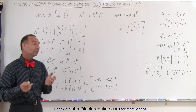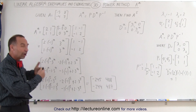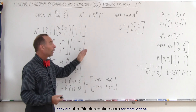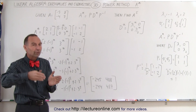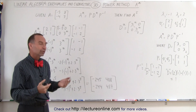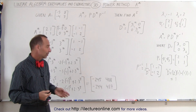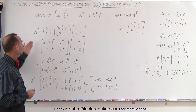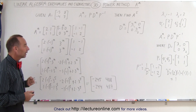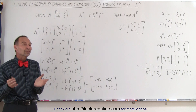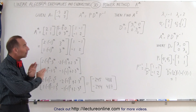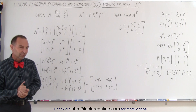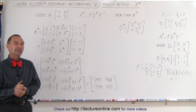As the power gets larger and larger, this method becomes a fairly nice approach to use, rather than multiplying the matrix over and over again multiple times. This is a nice way to find the generalized formula for A to the nth power. In the next video, we'll do this again with even more generalized terms so you can see how the formula actually looks.